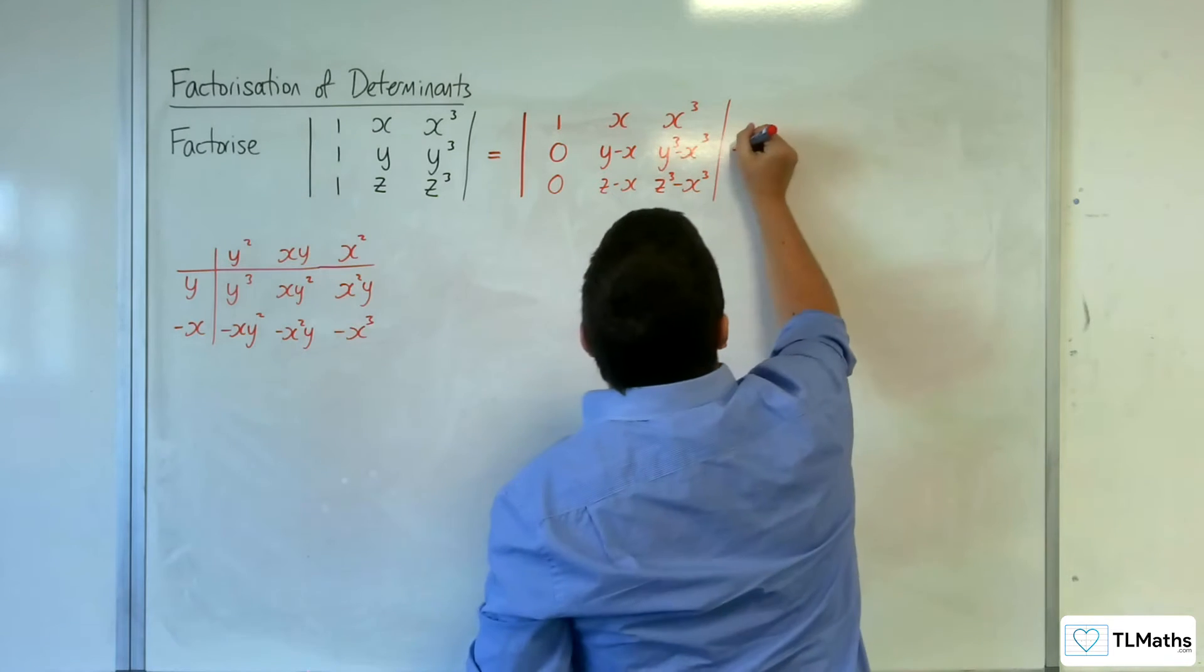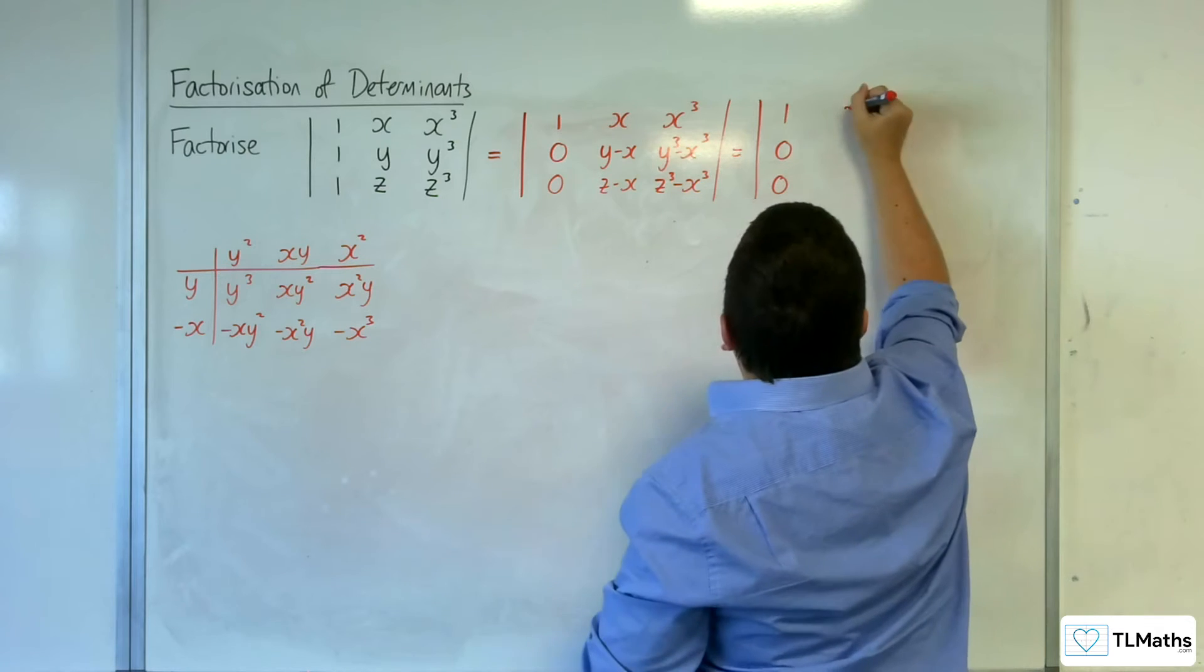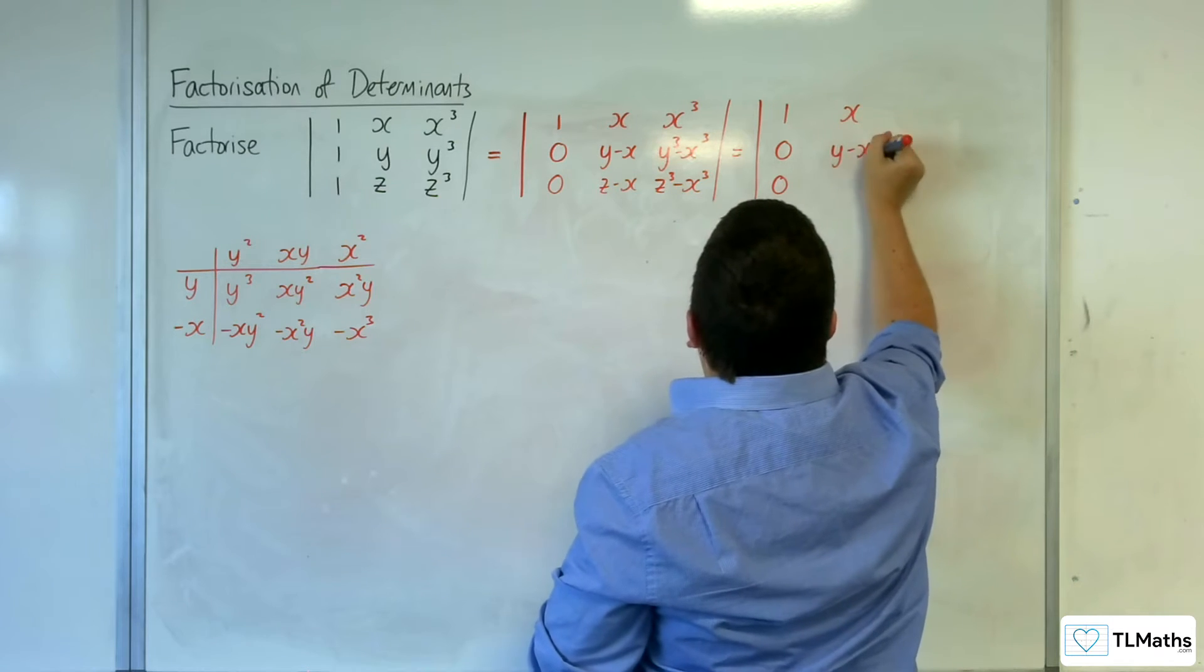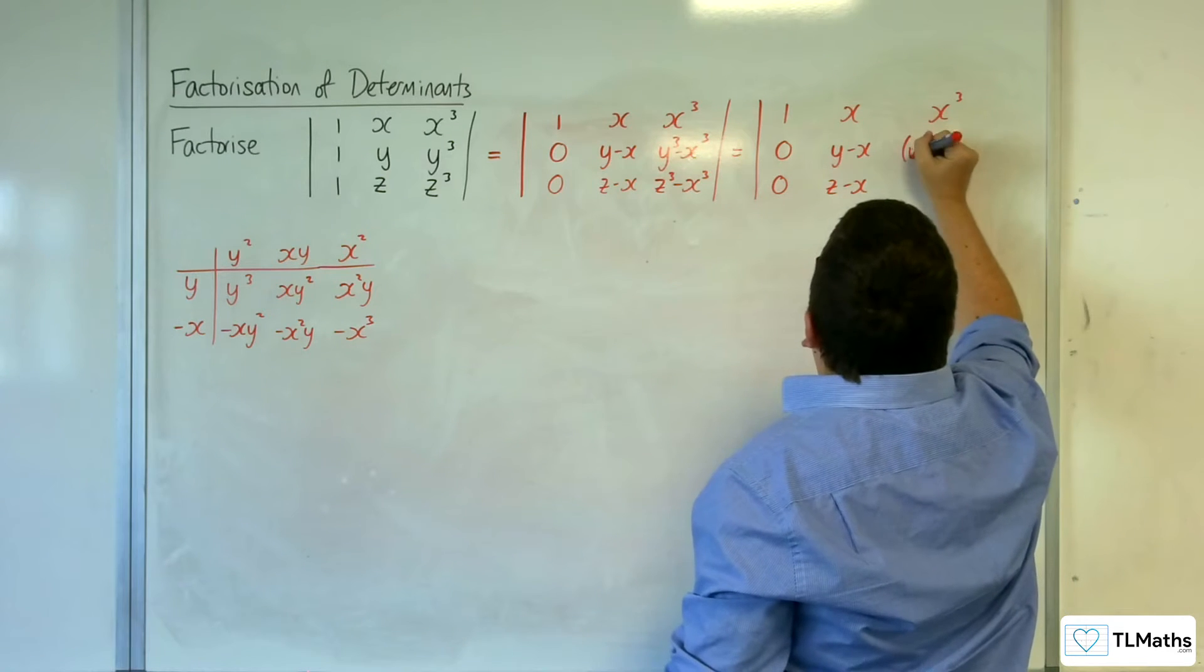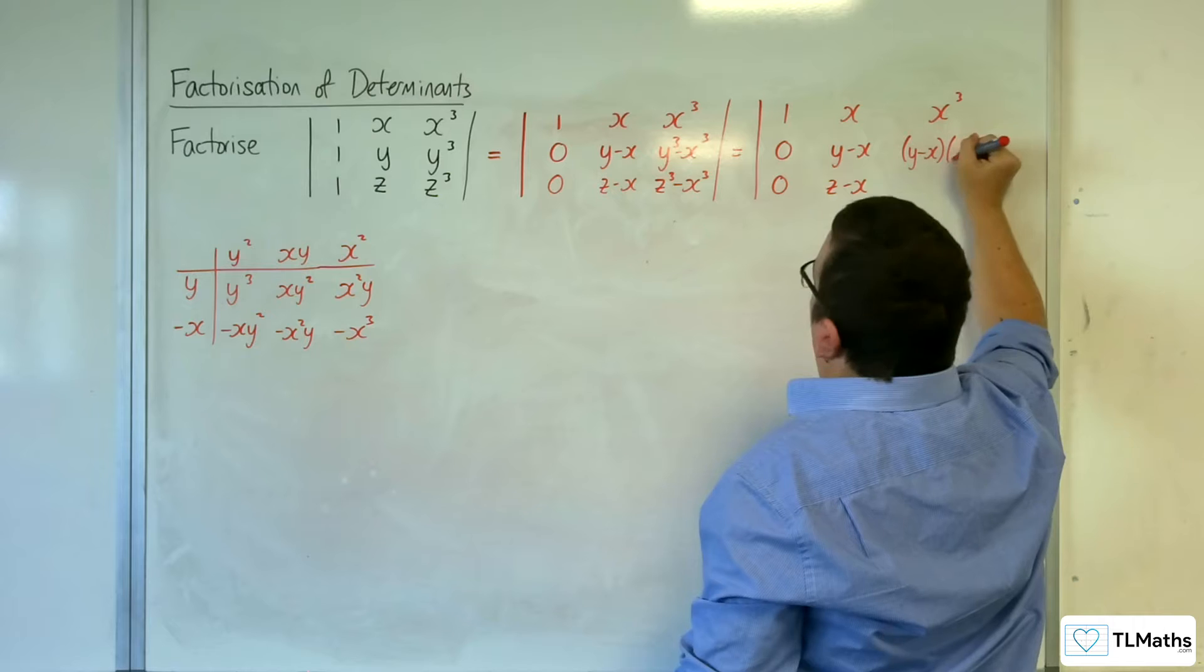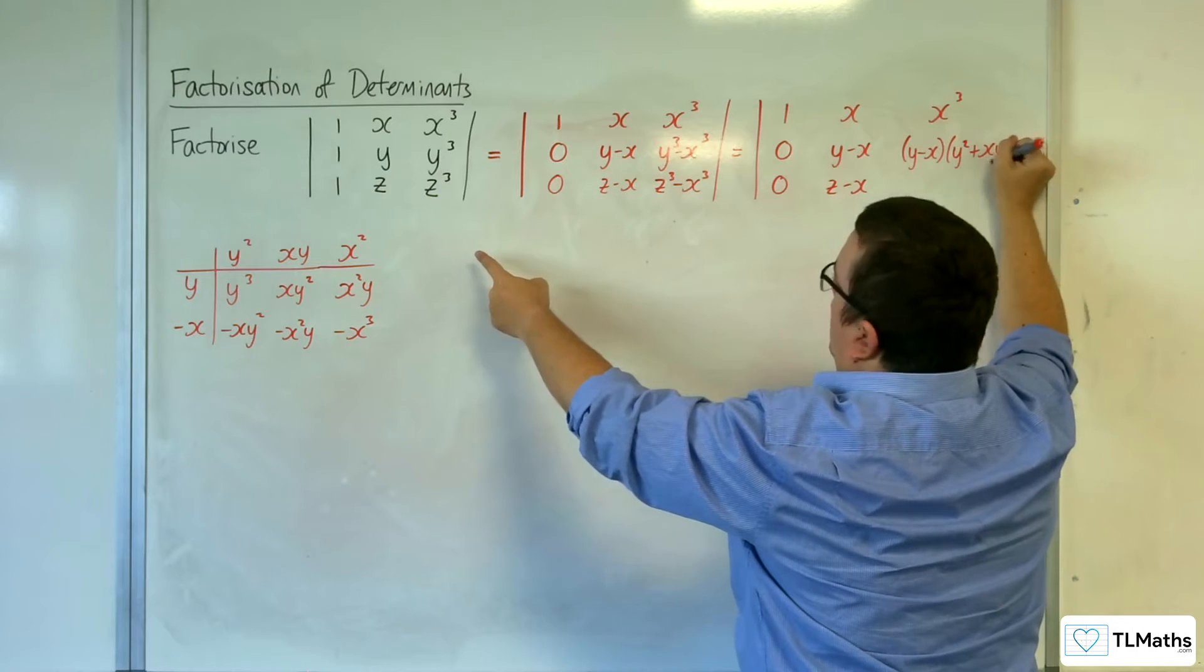So, if I divide y cubed take away x cubed by y take away x, I get y squared plus xy plus x squared. So, I can write that directly in. 1, 0, 0; x, y take away x, z take away x. Then, x cubed, and this is going to be y take away x times the y squared plus xy plus x squared.